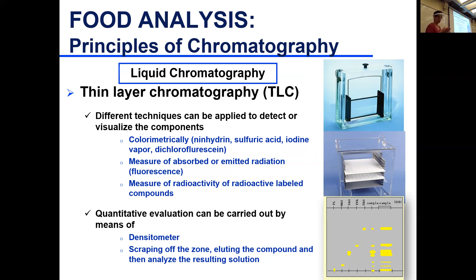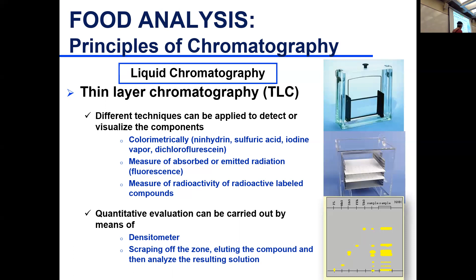It can be semi-quantitative if you have a densitometer — you can measure the density or intensity of the spot and relate that to concentration. Or you can scrape off the spot, run it through a column that specifically interacts with your component, purify it, and then quantify it in a different analysis.